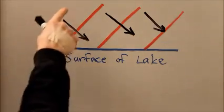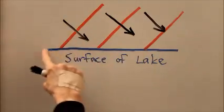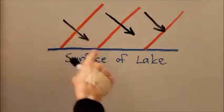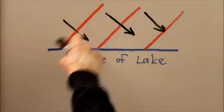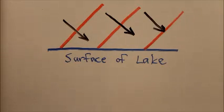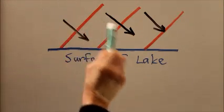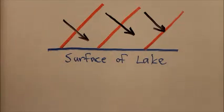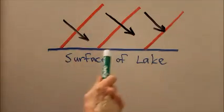Imagine incident light coming down on the surface of a lake. The black arrows show the direction in which the light travels, and the red lines are wave fronts. When light enters the water, here's the air up here, the water down here...